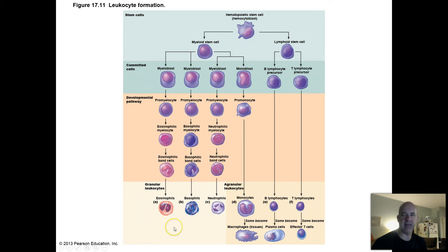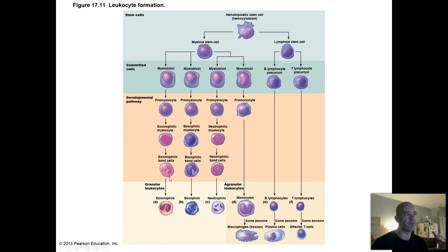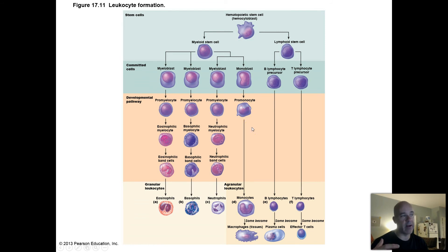We've talked about these processes before and how the formation of different types of white blood cells goes through step-by-step processes. These cells have different stages along pathways, and some of these disorders start in immature forms of white blood cells that begin dividing out of control and become cancerous.